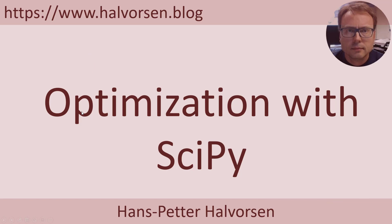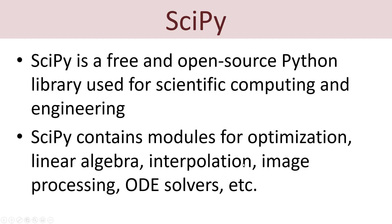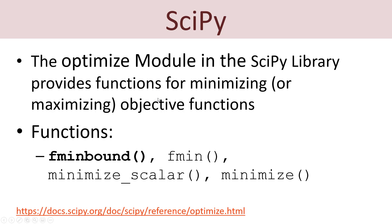Next we demonstrate more advanced optimization functions from the SciPy library. SciPy is a free and open-source Python library used for scientific computing and engineering. It contains sub-modules for optimization, linear algebra, interpolation, image processing, language processing, ordinary differential equation solvers, and more. The optimize module provides functions for minimization or maximization, including fminbound, fmin, minimize_scalar, minimize, and others found in the SciPy documentation.